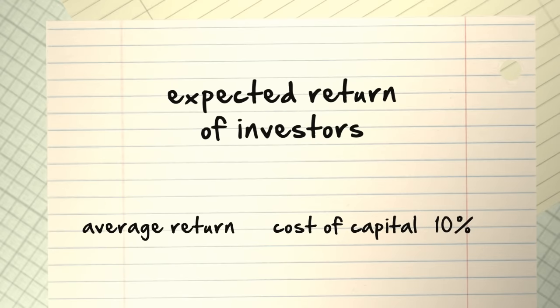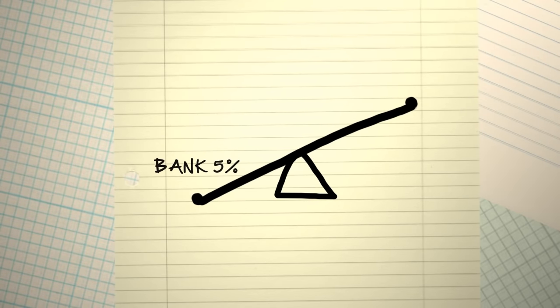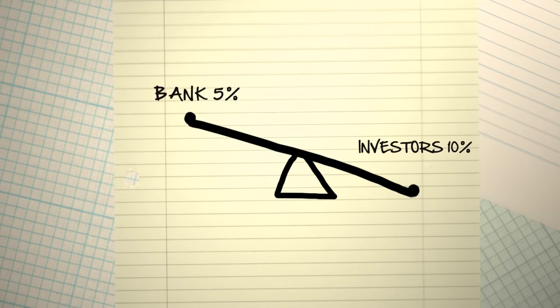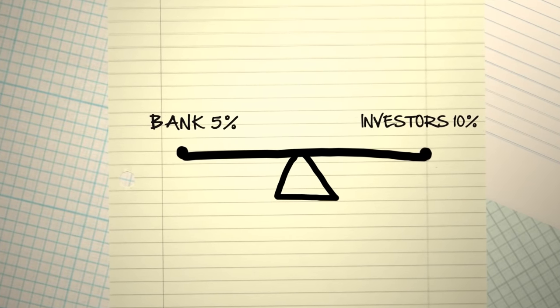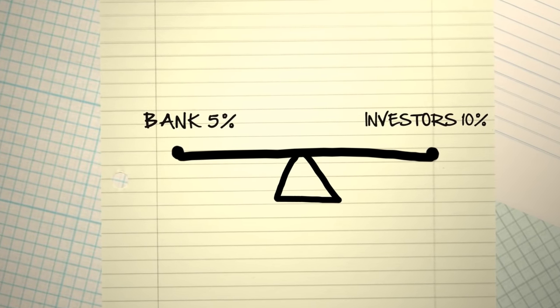Now here comes our problem. What if part of your capital comes from the bank, borrowing at 5%, and another part of your capital comes from investors, expecting 10%? Is your cost of capital 5%, like the bank loan, or 10% like the investor's expected return?